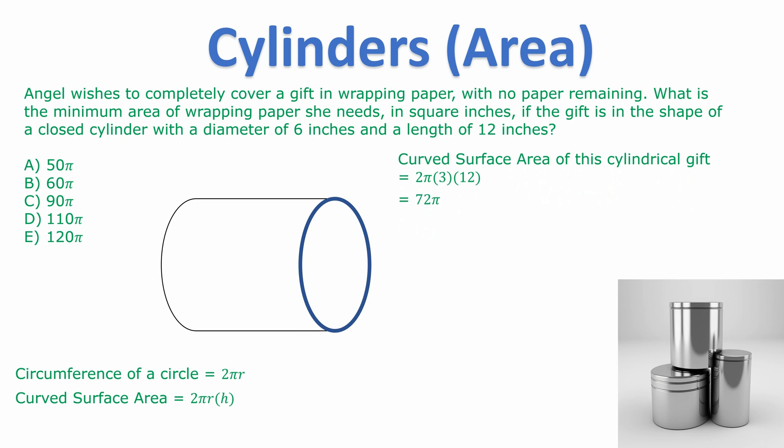Notice again I didn't actually calculate that as a decimal. I know that π is 3.14. I just left it as 72π. Now for the decision of how many circles to add on.